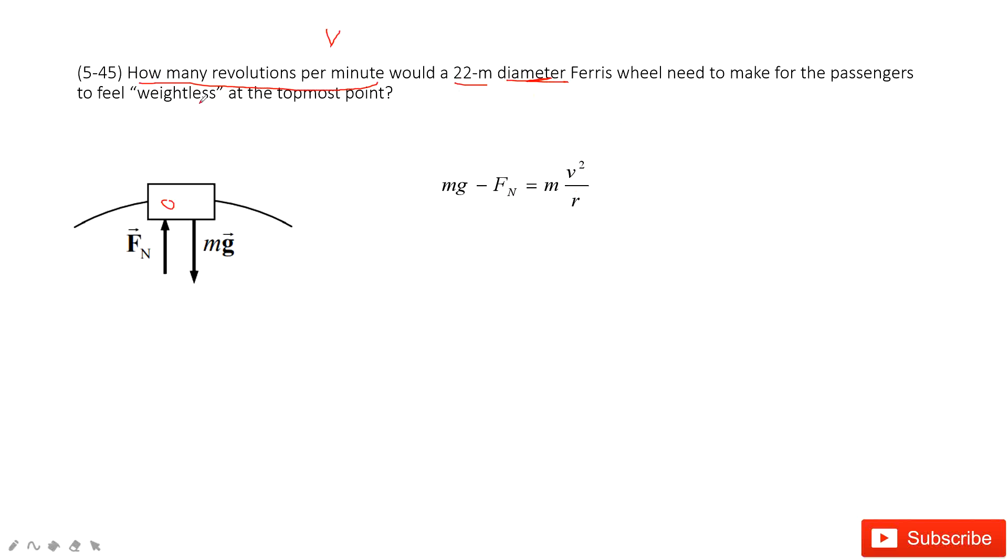The person feels weightless, so that means the person couldn't feel the normal force to support them. So the normal force becomes zero. In this situation, you can find the velocity equals the square root of g times r when Fn is zero.